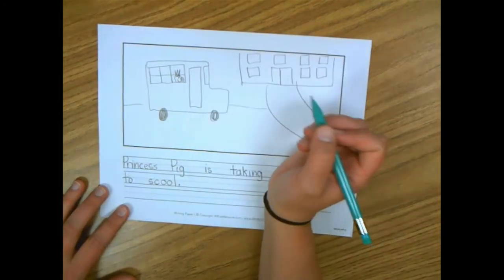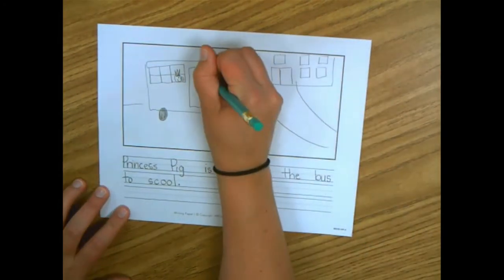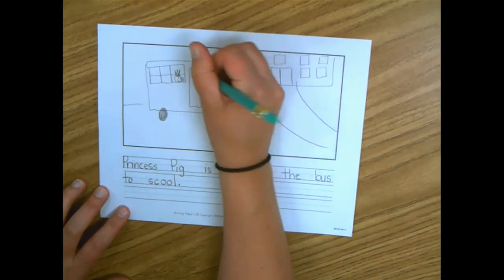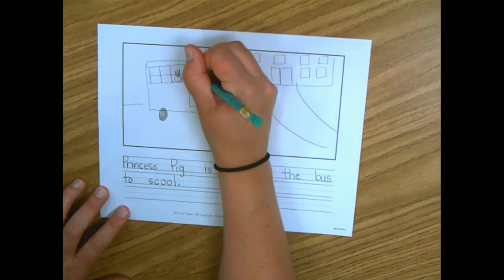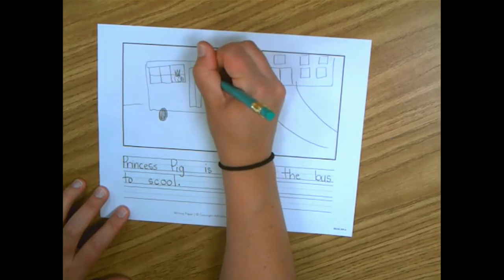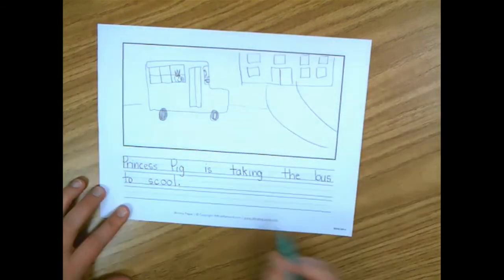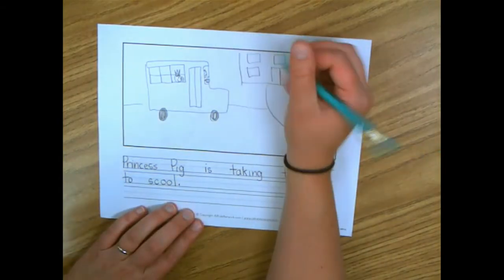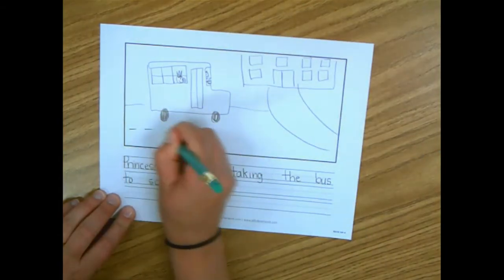A detail I might want to add is the steering wheel, and you can see the driver here because we want a driver on our school bus, right? And maybe I'm going to add some more details here. This is the road.